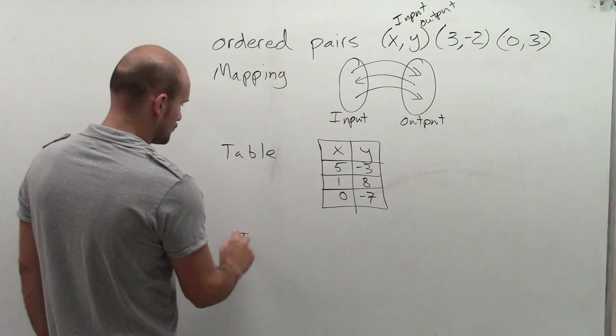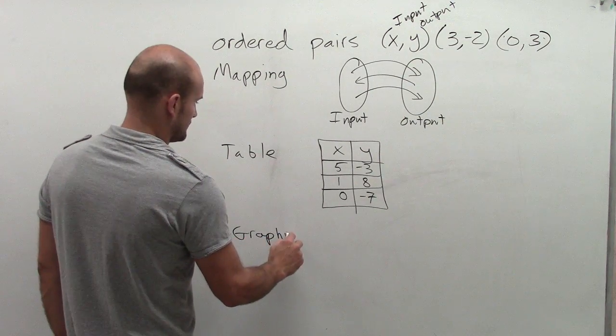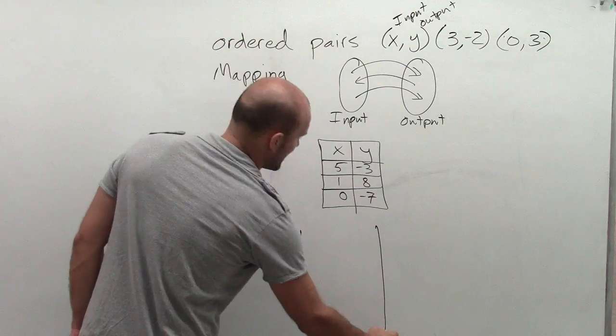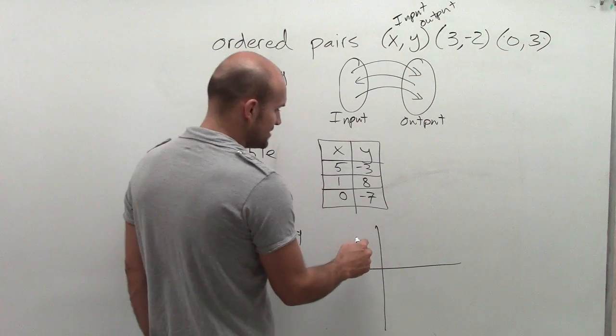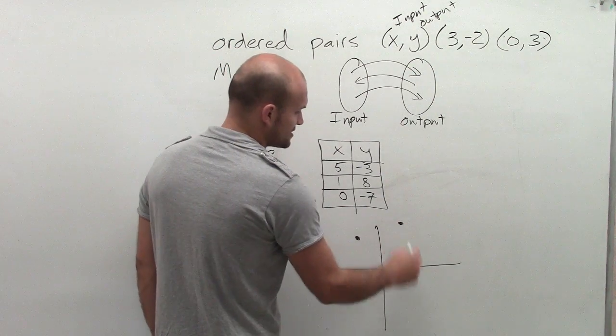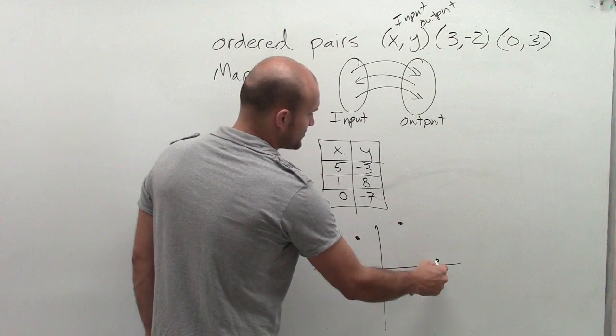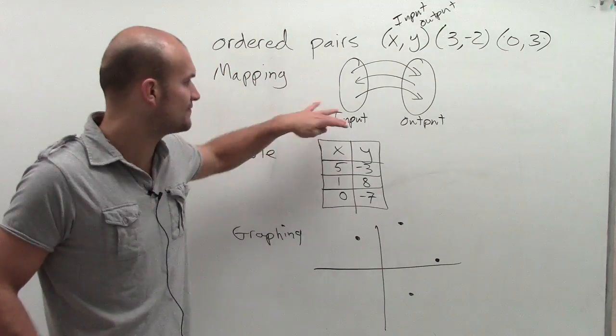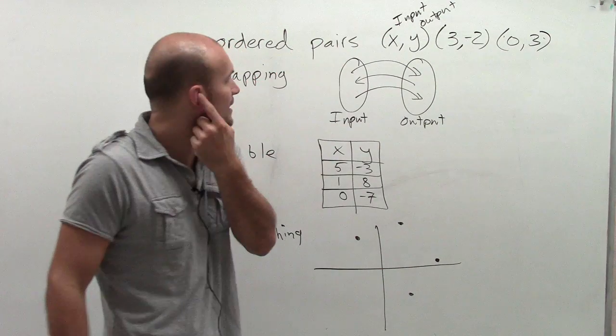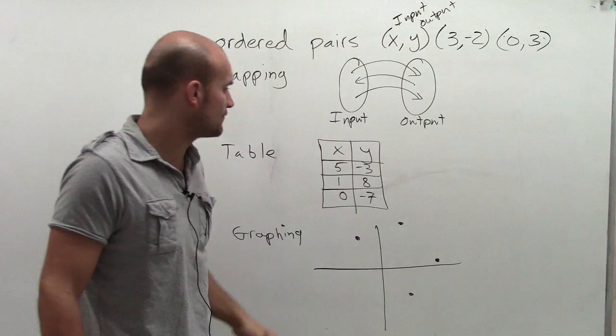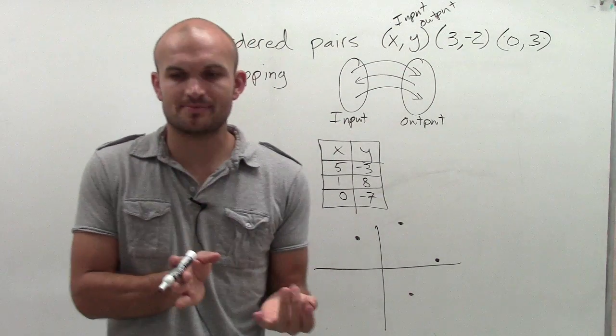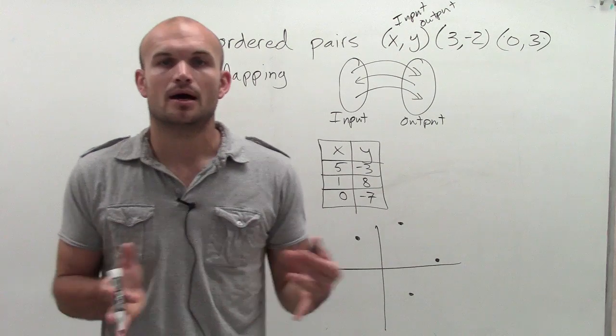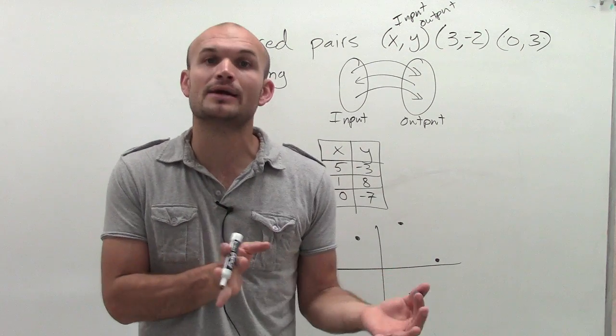And another way is graphing. When I'm plotting points, we can see that there is a relationship between the points. And you can get these plotted points from a table, from ordered pairs, and also graphing. So it's just different ways for us to be able to see the relationship between our input and our output.